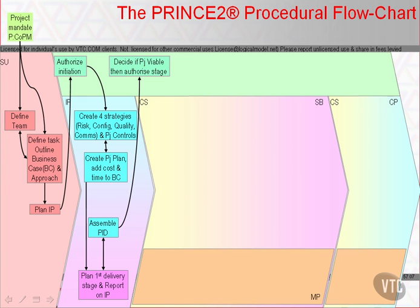We saw just now how the mandate triggers starting up a project, and if authorised, we then perform the activities of the initiation stage. The initiation stage results in the production of a decision support package called the Project Initiation Document, or PID, as described in Appendix A, Template A20. PID is a collection of many elements, like the A1 Benefits Review Plan, and is accompanied by things like the A9 End Stage Report and the A16 Next Stage Plan.